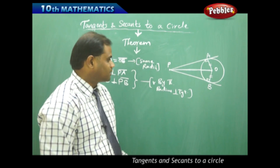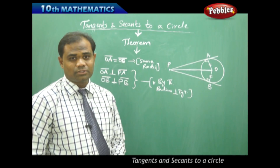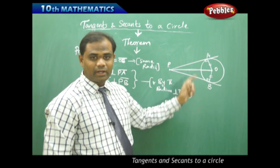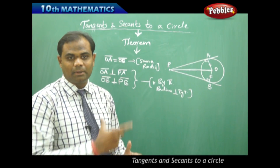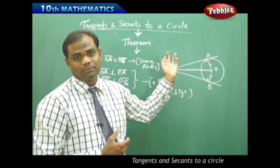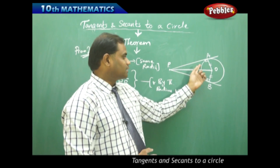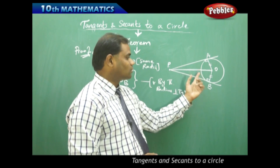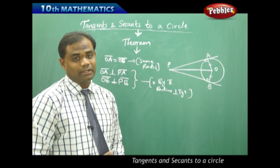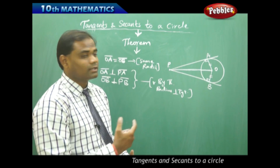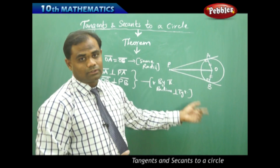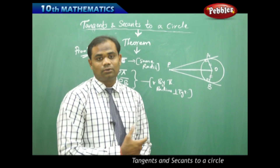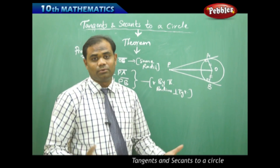Looking at the diagram, we identify two triangles: triangle OAP and triangle OBP, which are part of the entire figure. We intend to show that these two triangles are congruent, which will help us conclude that PA is equal to PB.